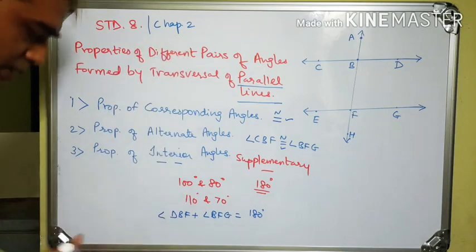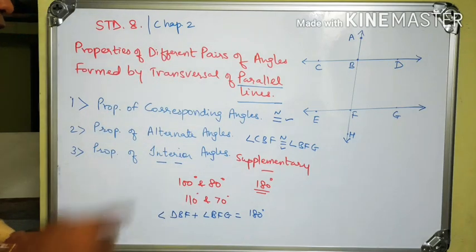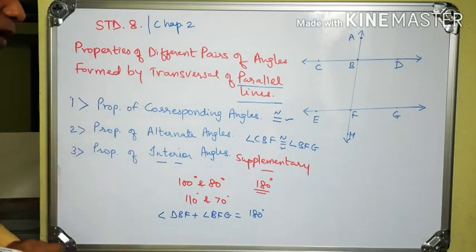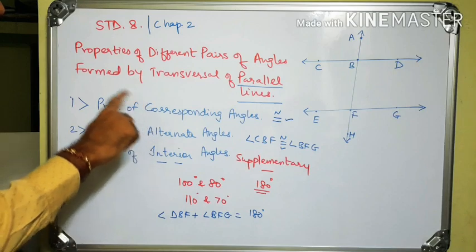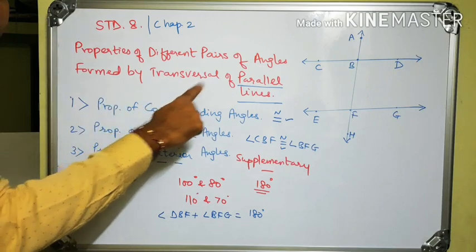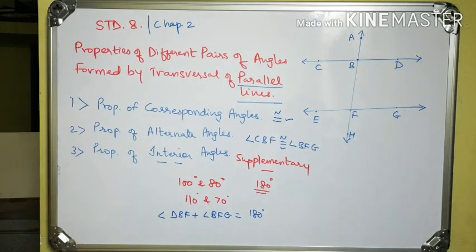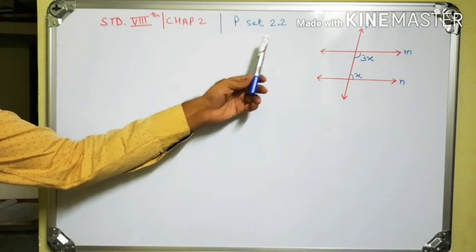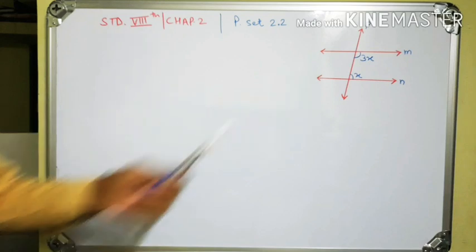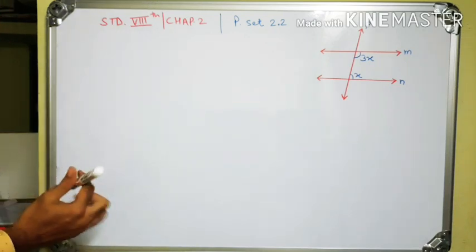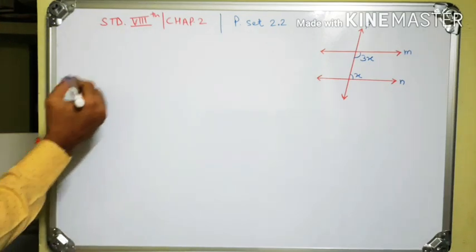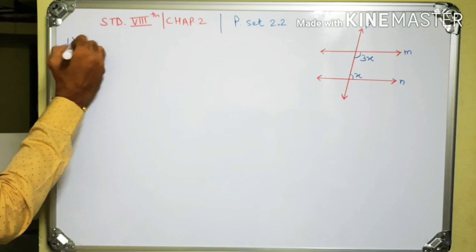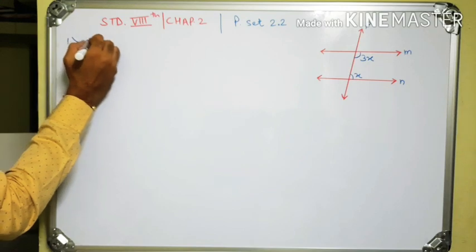These are the properties of different pairs of angles formed by a transversal of parallel lines. Now let's start Practice Set 2.2. This is the first question and first sub-question.